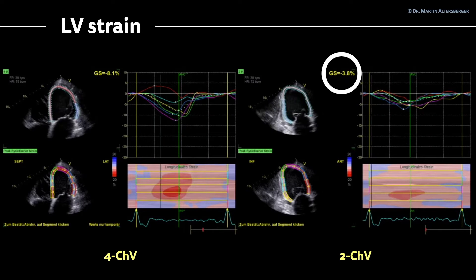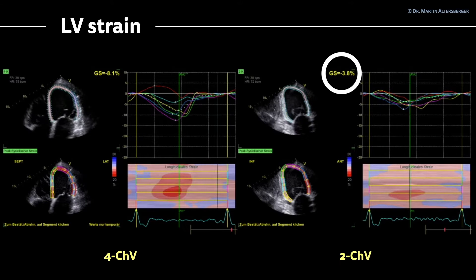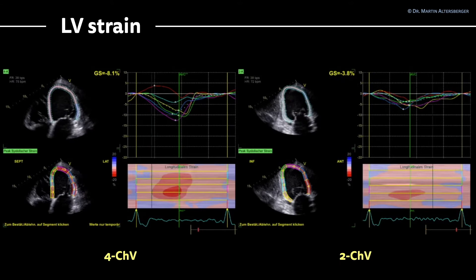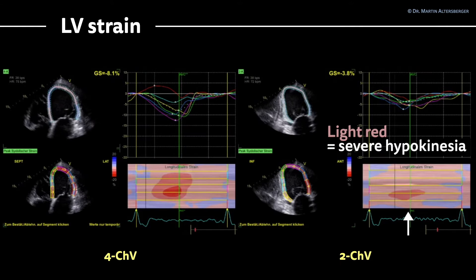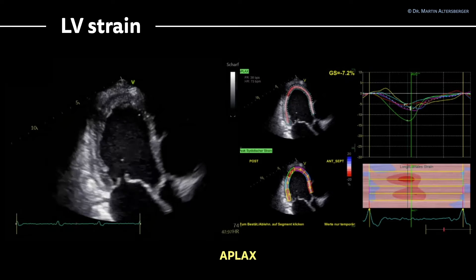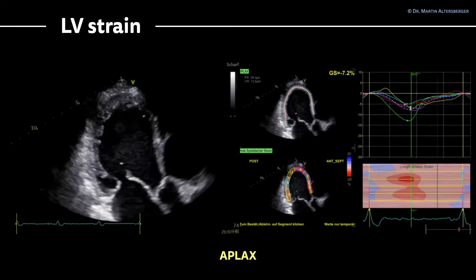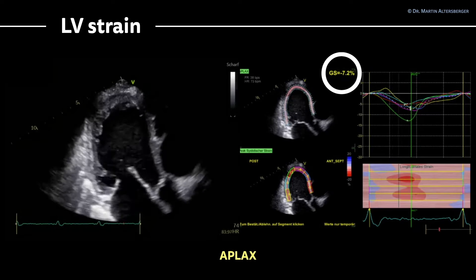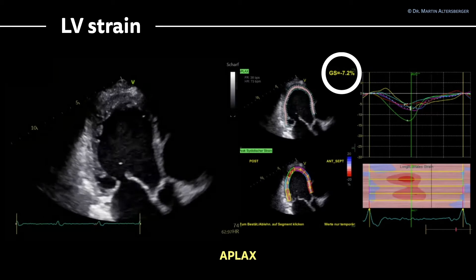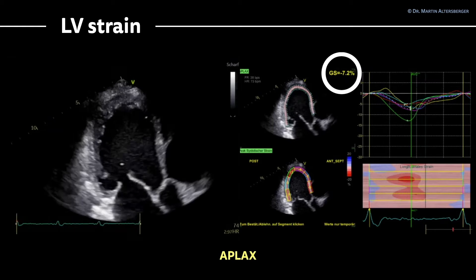In the 2-chamber view, we see a global strain of minus 3.8%, which is also severely reduced. We see the light red color in the strain M-mode, with not even a tiny bit of darker red color. In the apical long axis view, the global strain is minus 7.2% — again a severely reduced left ventricular strain imaging, with some areas slightly darker red in the color M-mode.